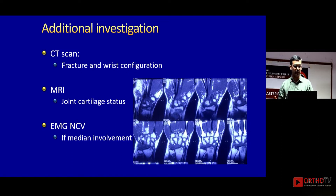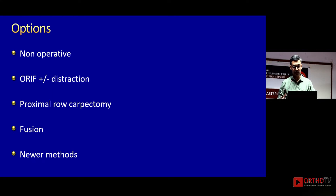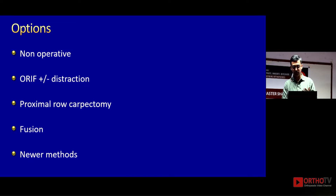The options for me are four: non-operative, fixation plus or minus distraction, proximal row carpectomy, and fusion. The newer methods I have not tried out. This should cover all your missed perilunates, but hopefully you should not reach that level.